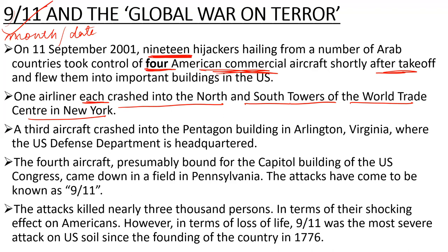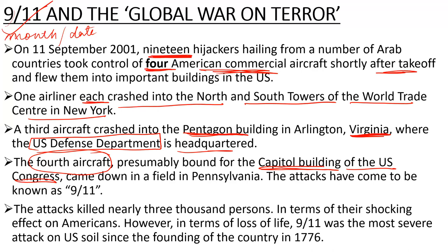The third aircraft crashed into the Pentagon building in Virginia, which was the headquarters of the US Defense Department. The fourth aircraft — they had planned to crash it into the US Capitol Building where Congress was meeting — but it fell into a field in Pennsylvania instead.